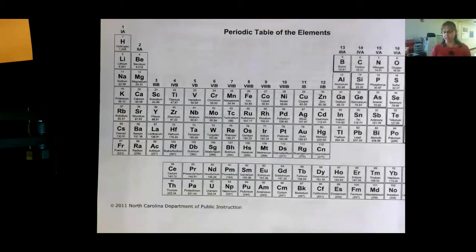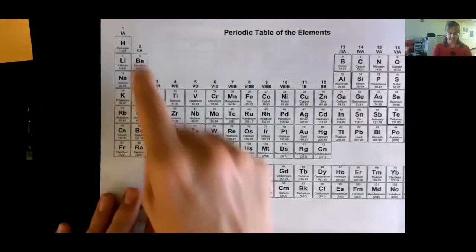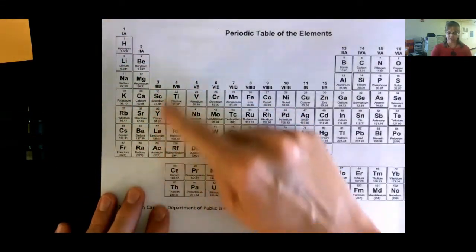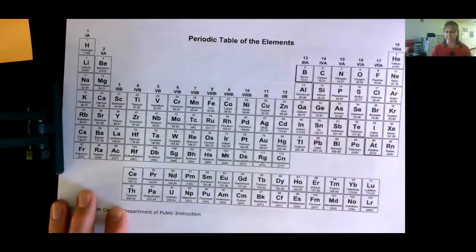Groups have things in common and families have things in common, so these elements have similar properties. When you count your groups, just go one, two, three, and keep counting all the way to the end.